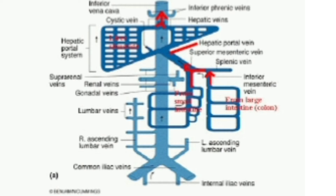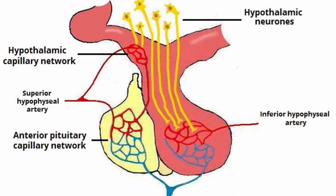The next circulatory pathway is the hypophyseal portal system. Another minor portal system, called the hypophyseal portal system, consists of two hypophyseal portal veins which carry blood from the hypothalamus to the anterior lobe of the pituitary gland.